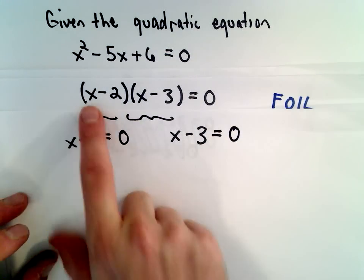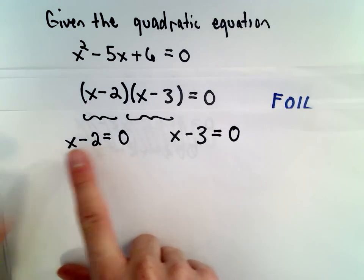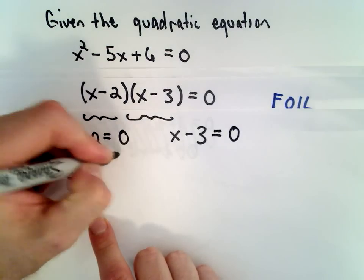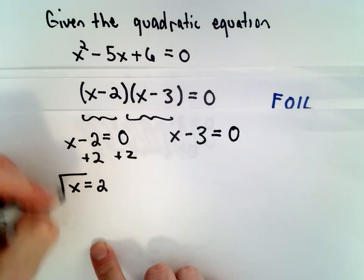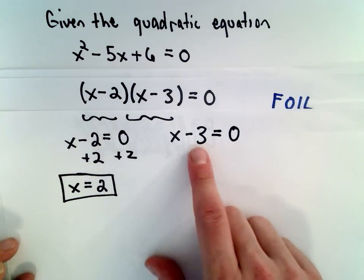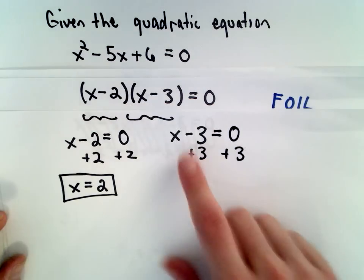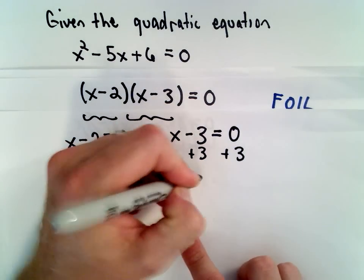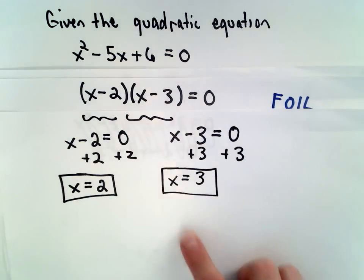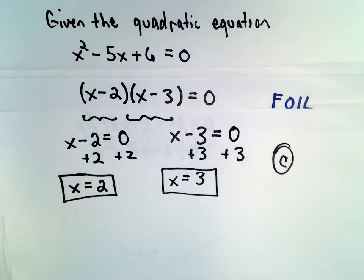If I take x minus 2 and set that equal to 0, if I want to get x all by itself, I've got x minus 2 equals 0. I can add 2 to both sides. That would leave me with x equals 2. That would be one of your solutions. And likewise, we can add 3 to both sides for the equation x minus 3 equals 0. That would give me x equals 3. That would be my other solution.